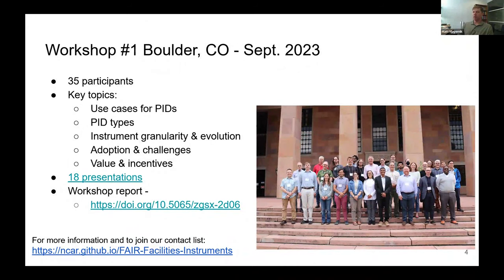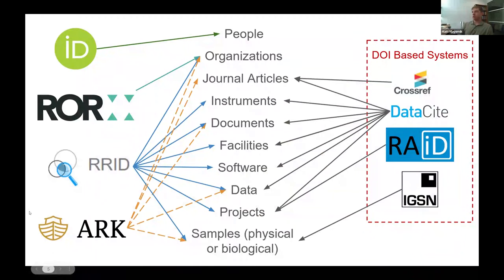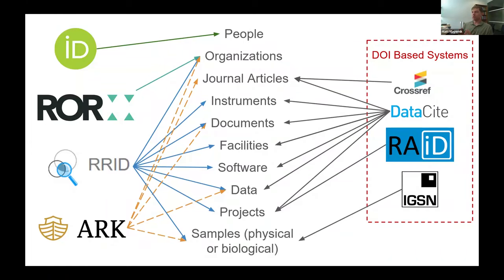We have lots of presentation materials on our website and did release a report. There's a picture we put together demonstrating some of the complexity when looking at different identifier types. The ones on the left are assigned for many different things; the ones on the right are mostly DOI-based systems. People who are assigning PIDs may not really understand this ecosystem. A big challenge is jumping in from the outside — there are so many different identifier types used for different things. The challenge for this community is to make clear how it all fits together.